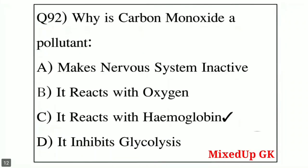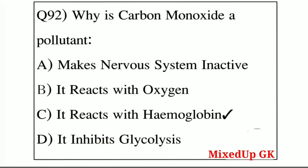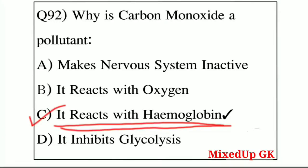Question number 92: why is carbon monoxide a pollutant? Option A: it makes the nervous system inactive, Option B: it reacts with oxygen, Option C: it reacts with hemoglobin and forms a stable compound, Option D: none. The correct answer is Option C — it reacts with hemoglobin.